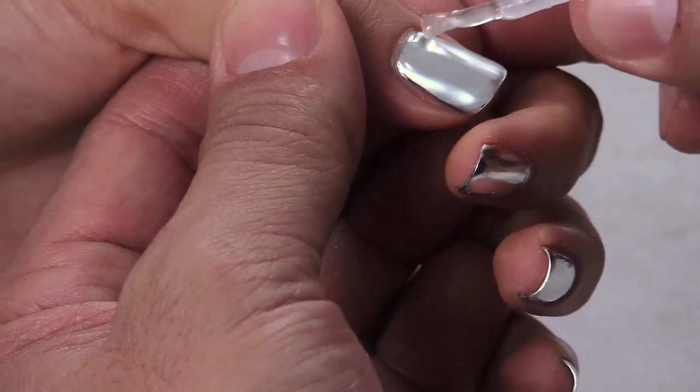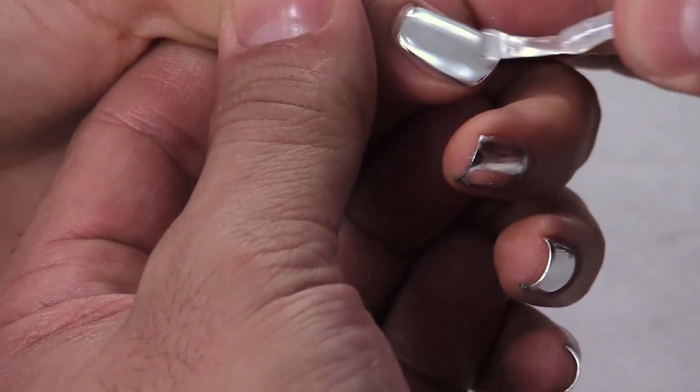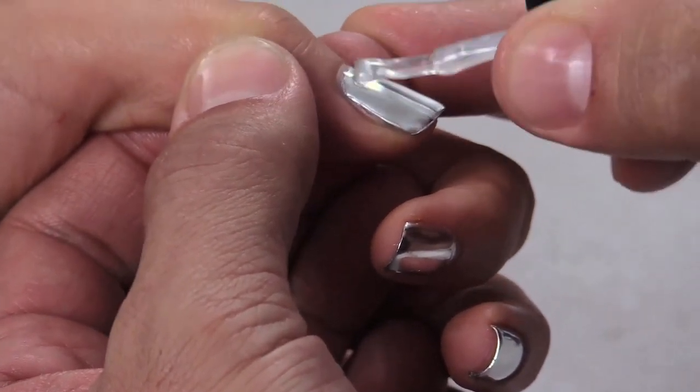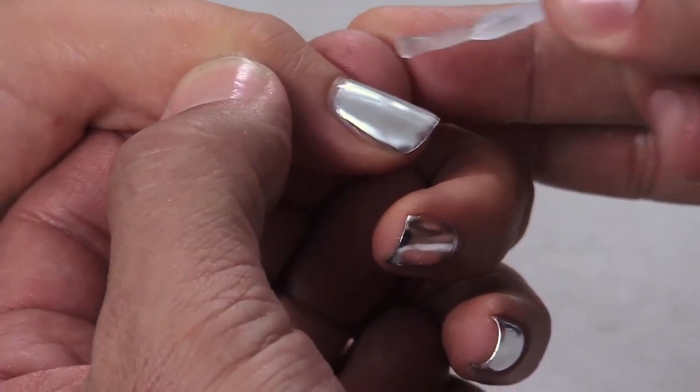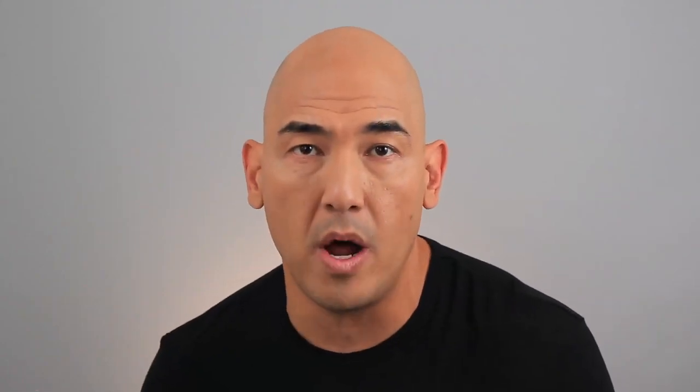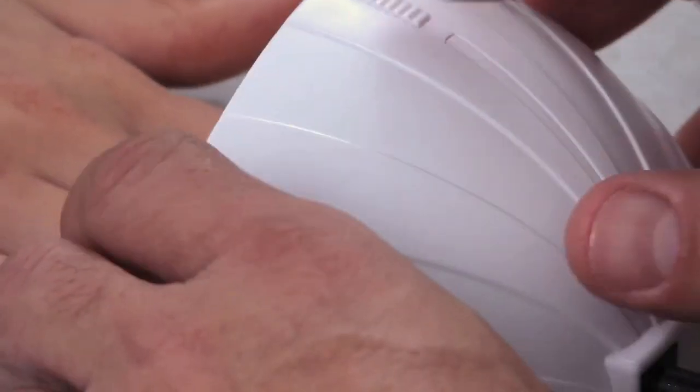Immediately what you start to see is the brushed effect. What the sealer is going to do is lock in the liquid and prevent it from chipping. We're going to cure it in our LED for one minute or your UV for two.